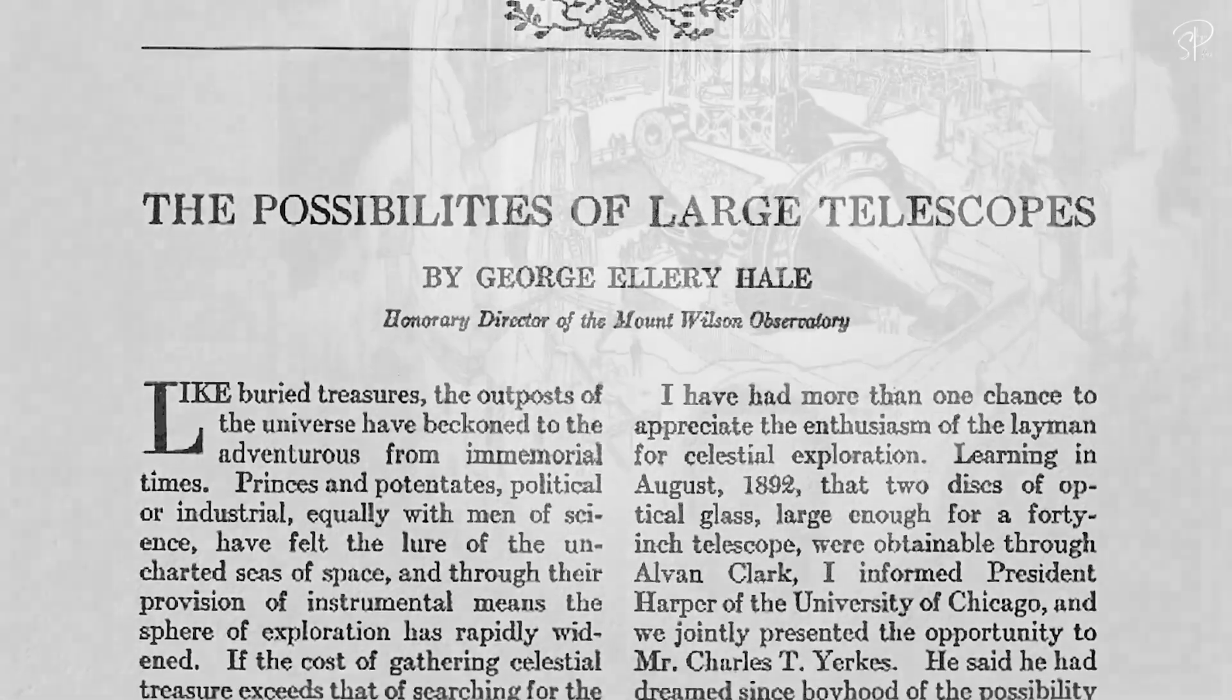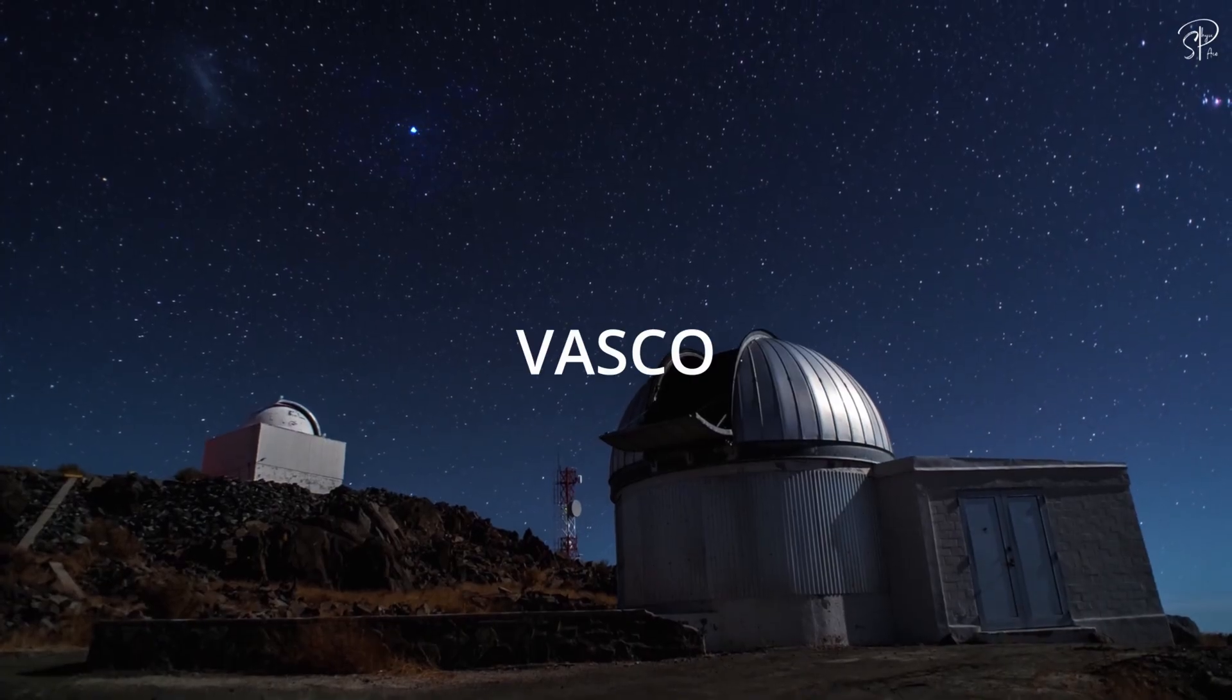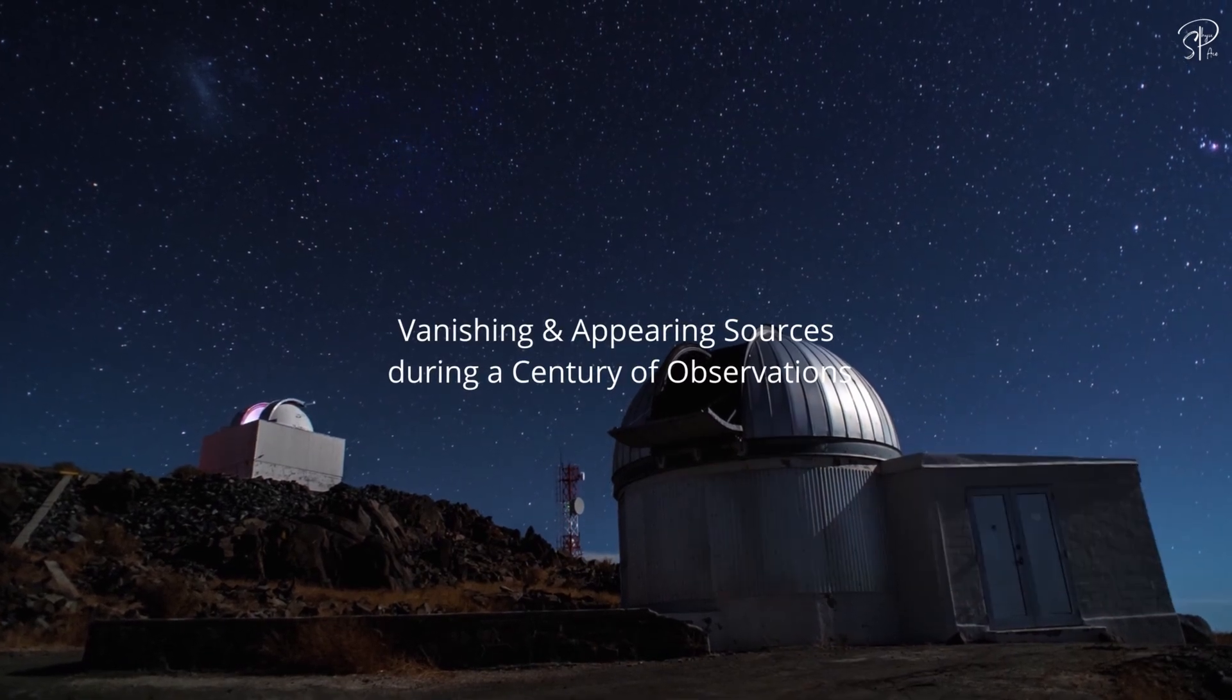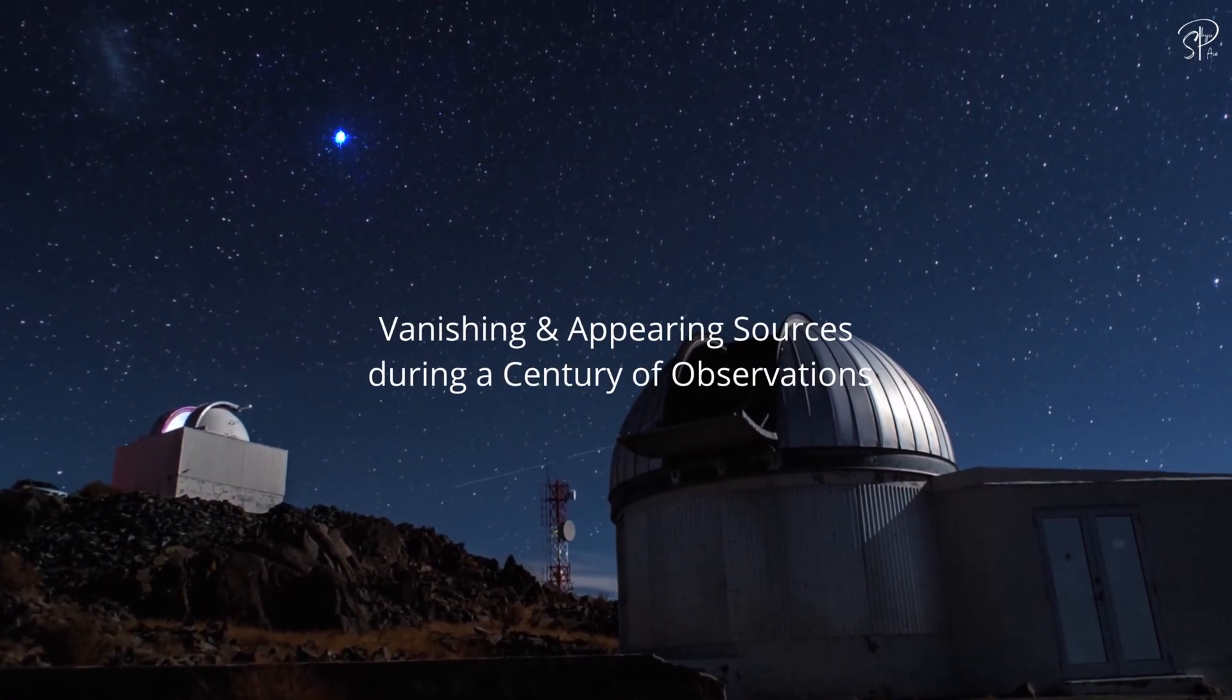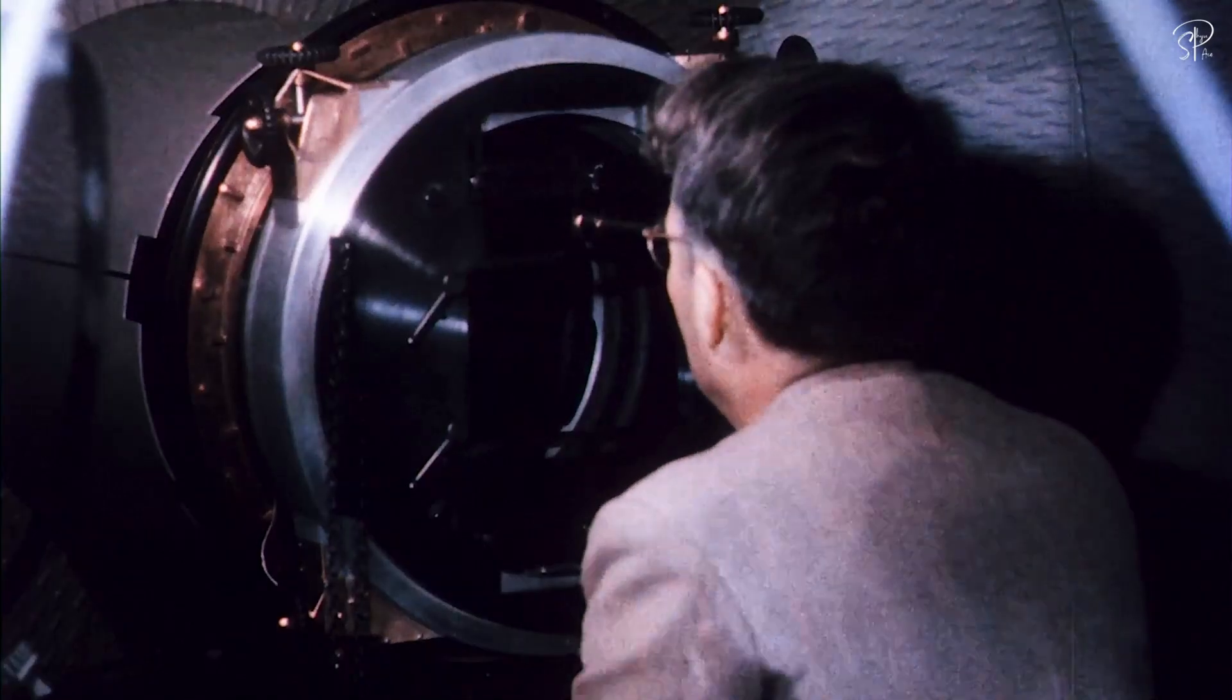A few years back, scientists discovered something really unusual for the first time. This was known as VASCO or Vanishing and Appearing Sources during a Century of Observations project. Yep, there's our capability of naming things, keeping it simple basically.